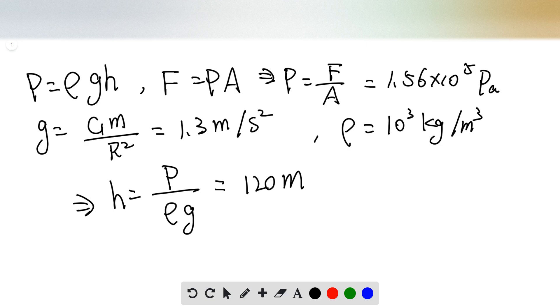So from the first equation, we can know that the depth can be calculated by the pressure divided by the density and the gravitational acceleration. We already know the pressure, the density, the gravitational acceleration. Plugging in the numbers here, we can get that the final depth is 120 meters.